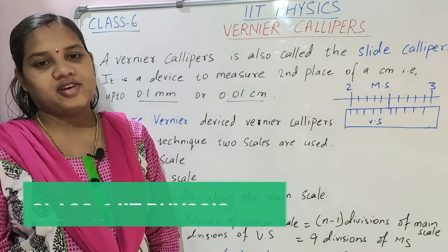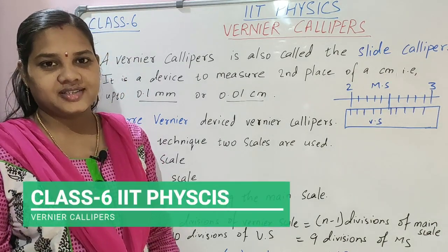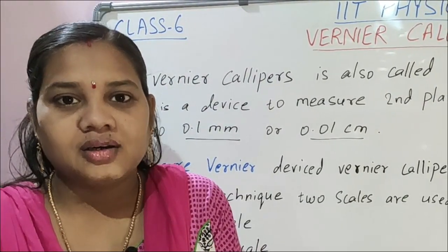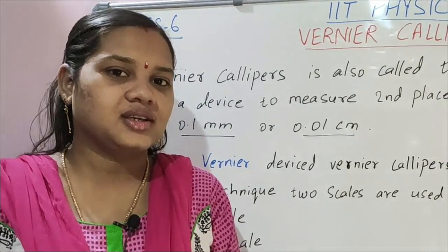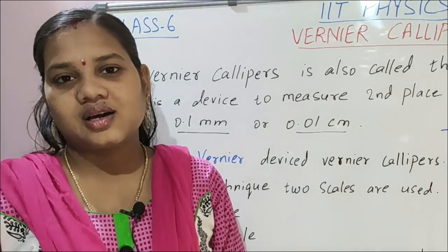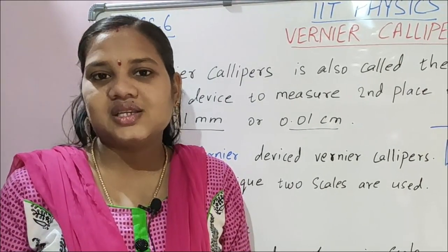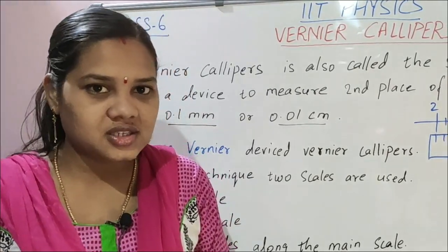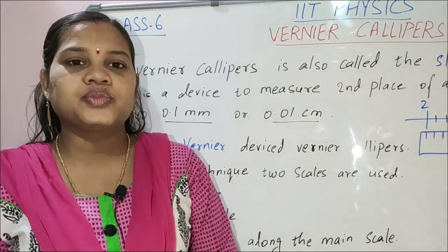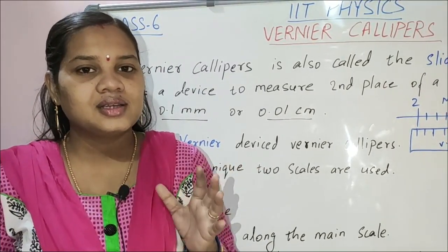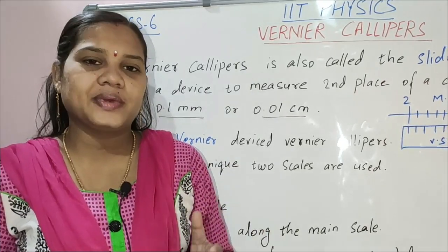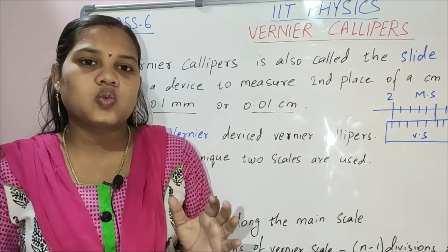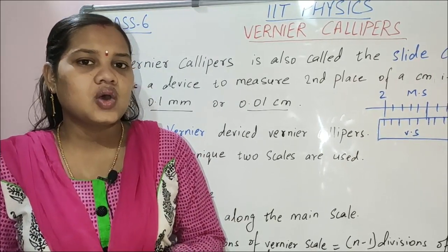Good morning children, this is Himnatha. Welcome to Class 6 IIT online class. In the last class we were discussing about measurement. We started with the vernier calipers, but first we saw the meter scale — what it is, how it measures, and what its limitation is. The meter scale is a device used to measure length, and its least count is 0.1 centimeter or 1 millimeter.